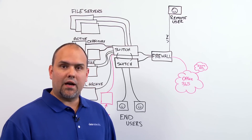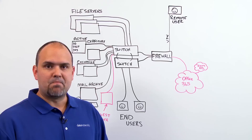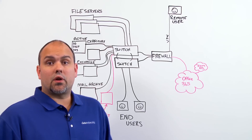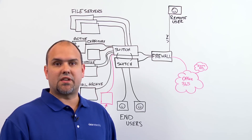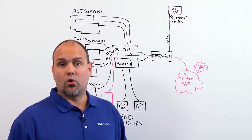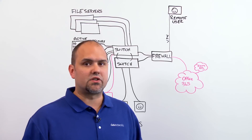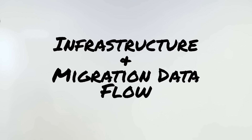The final option is an IMAP migration. This is used for other types of messaging systems other than Exchange, such as AOL, Lotus, or Google Mail, just to name a few examples. Now that we know what types of migrations exist, let me show you a bit about what your infrastructure could look like and how the migration data will flow.